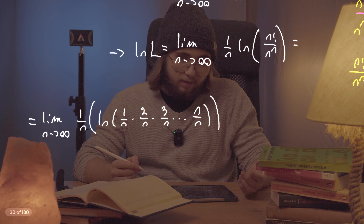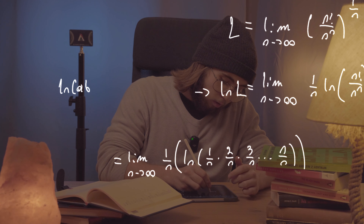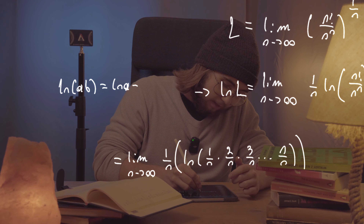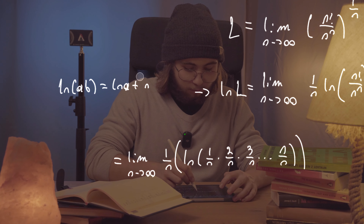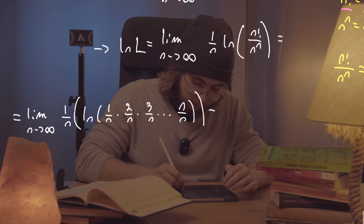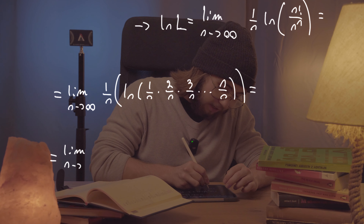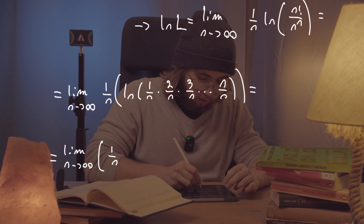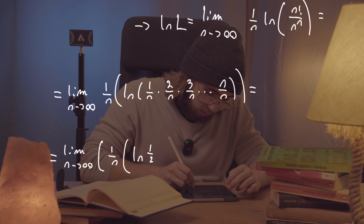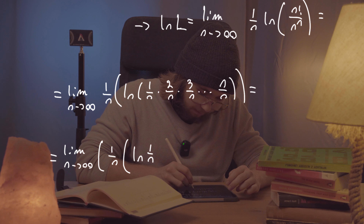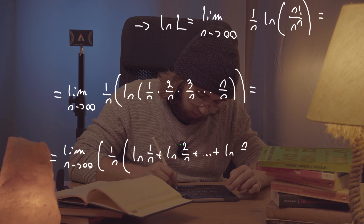By the properties of logarithms, log(a × b) = log(a) + log(b). Applying this property, we get the limit as n approaches infinity of one over n multiplied by the enormous sum: ln(1/n) + ln(2/n) + ... all the way up to ln(n/n).